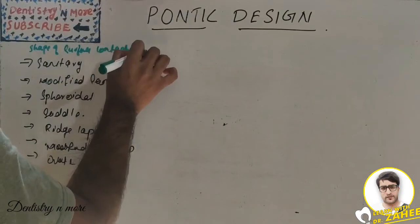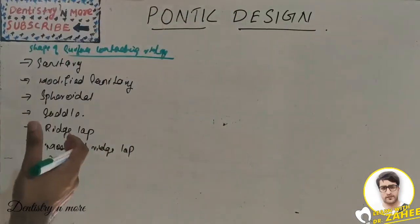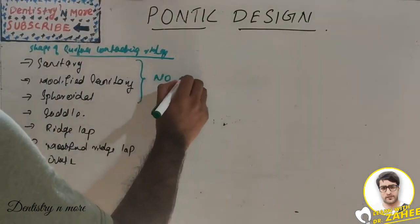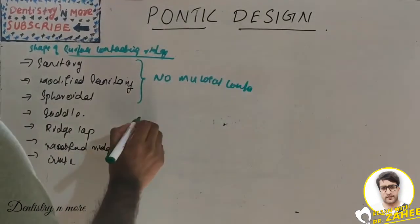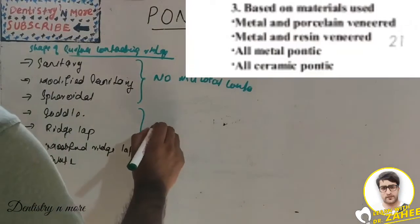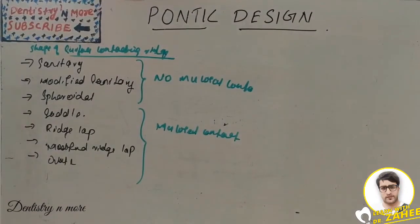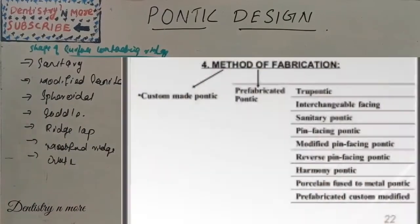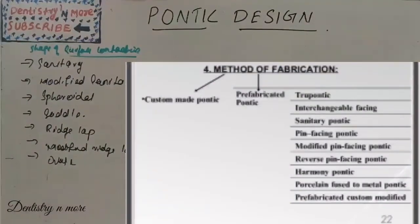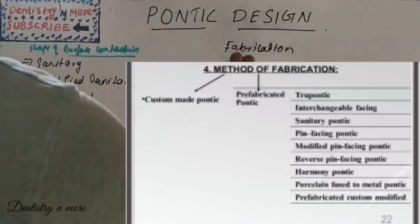The next classification is according to Rosensteil, depending on mucosal contact — that is, with mucosal contact and without mucosal contact. Sanitary and modified sanitary fall under no mucosal contact, meaning they have no contact with the gums. The others — ridge lap, modified ridge lap, conical, and ovate — come under the mucosal contact category. We also have another classification based on material: metal-and-porcelain, metal-and-resin, all-metal, and all-ceramic.